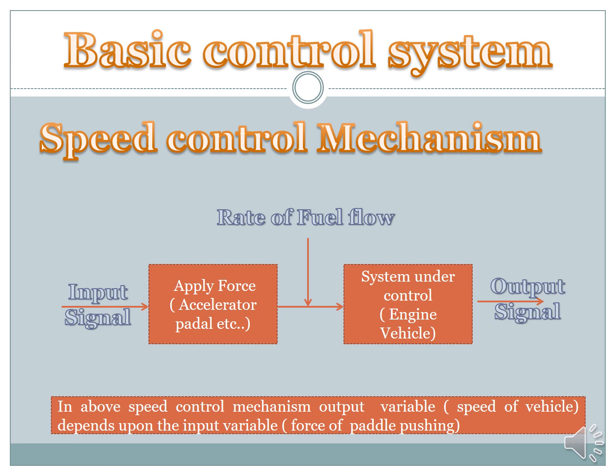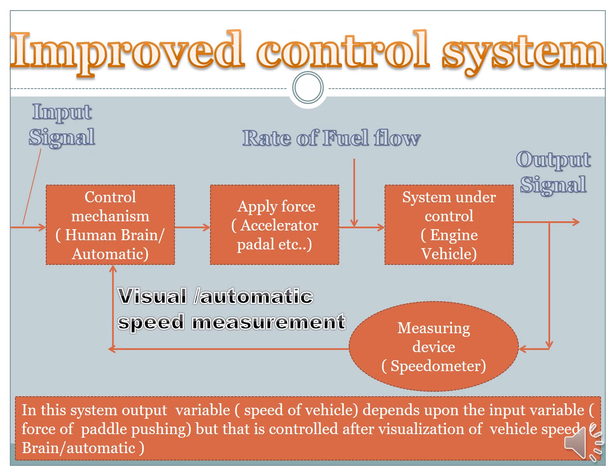In this basic control system — explained with the help of a speed control mechanism — the output variable is the speed of the vehicle, which depends upon the input variable. The input variable here is the force applied on the pedal. This is a simple speed control system. This speed control system can be improved by adding two additional features: one is a control mechanism, which can be the human brain or some automatic control system, and the second is a measuring device — the feedback mechanism, which is a speedometer in the case of a speed control mechanism.